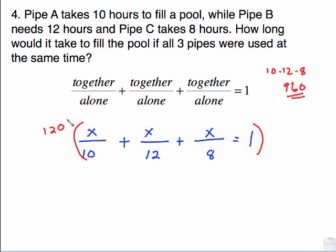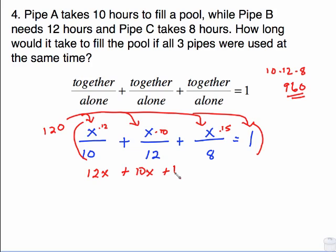And that means I need to multiply that 120 times this, this, this, and this. So I've got some reducing to do here. 10 goes into 120 twelve times, so this is 12x. 12 goes into 120 ten times, so this is 10x. 8 goes into 120 fifteen times, so this is 15x. And don't forget to multiply on the other side. 120 times 1 is 120.